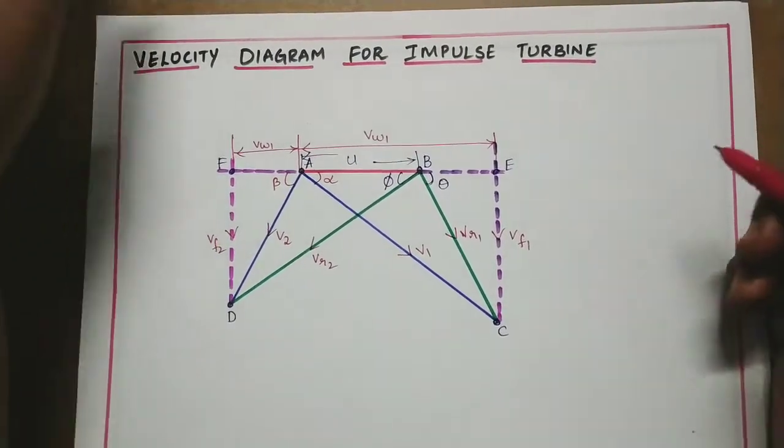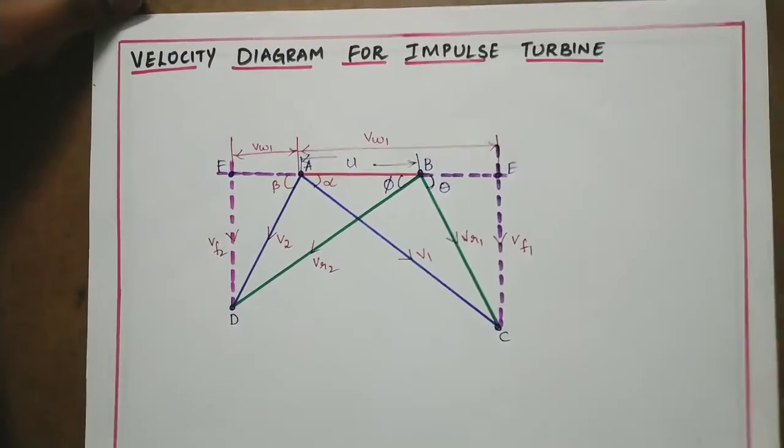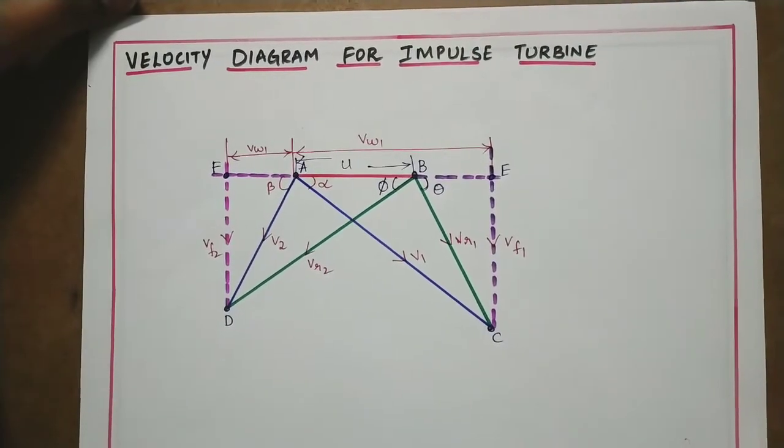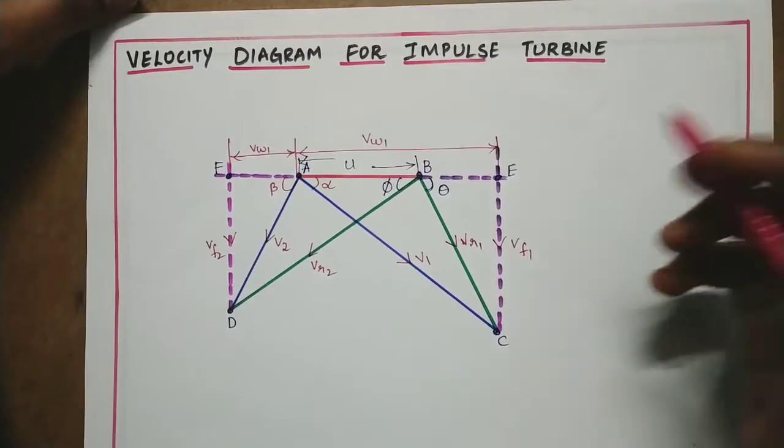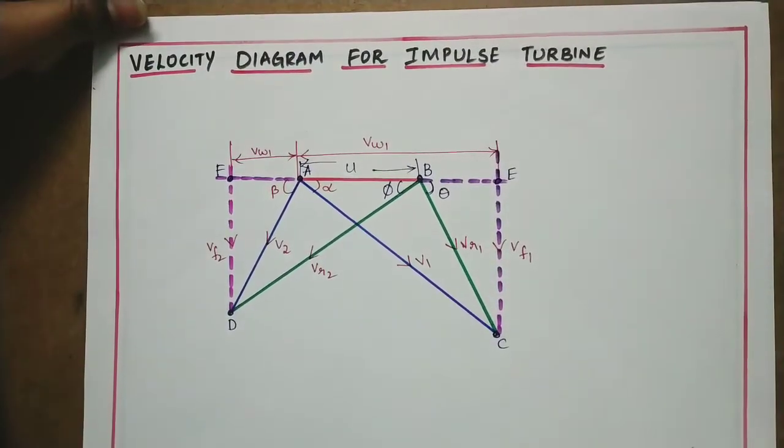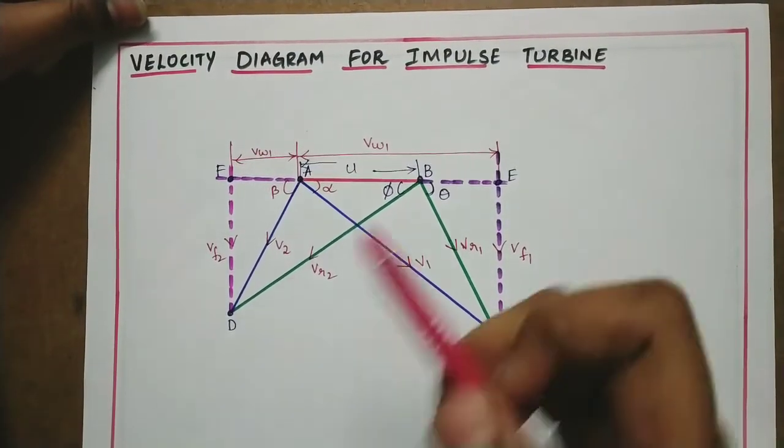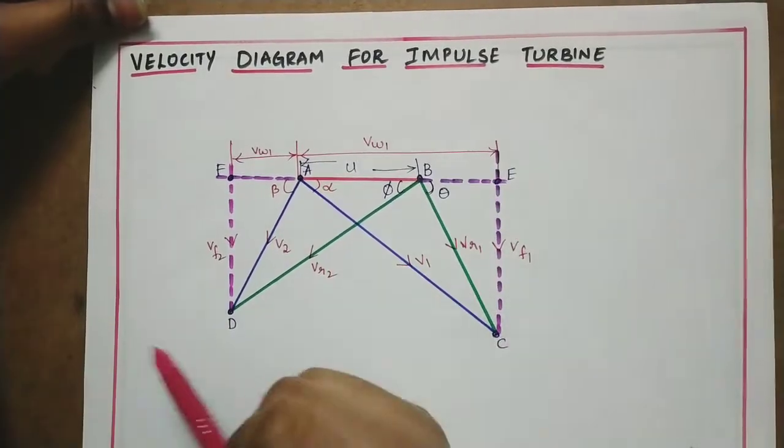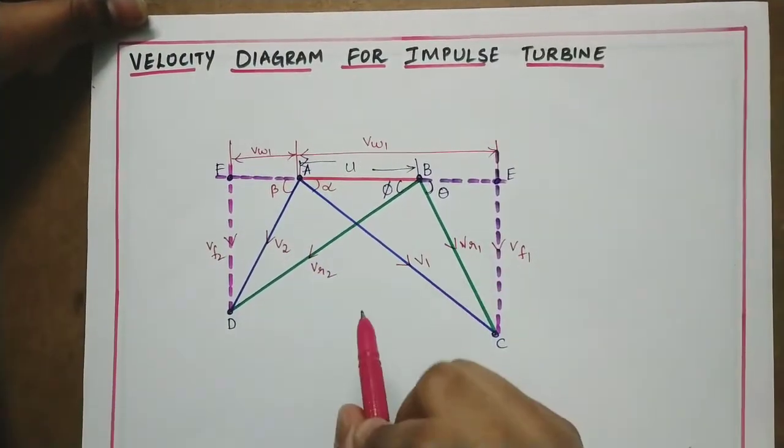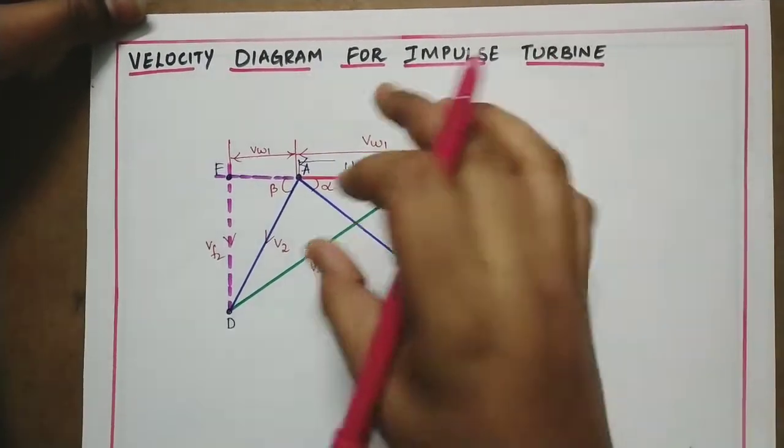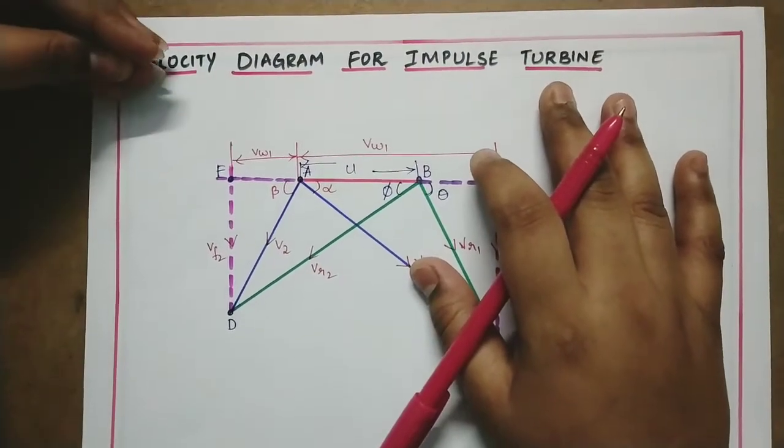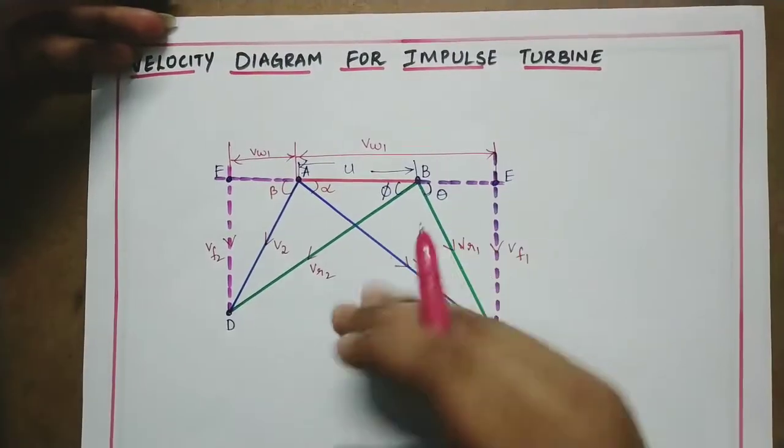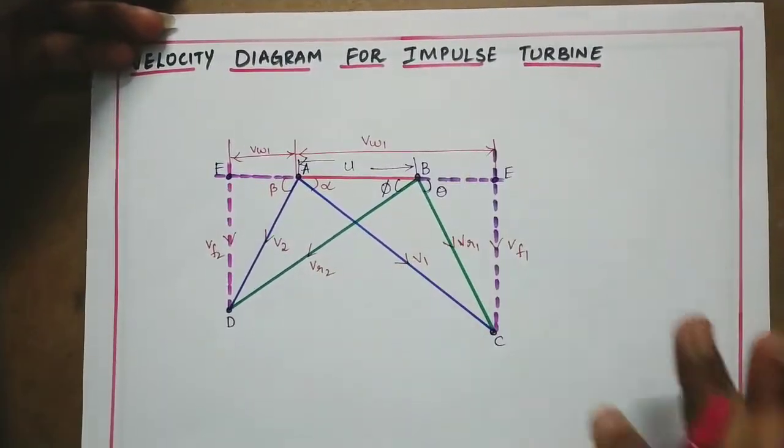Hello all, welcome to my channel. In this class we are going to study about velocity diagram for an impulse turbine, how to draw the velocity diagram for an impulse turbine. First we will discuss the various terms it has - first the angles and the velocities, different types of velocities, their names and notations, then the diagram will be easy to draw.